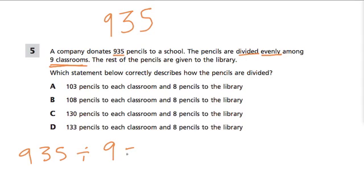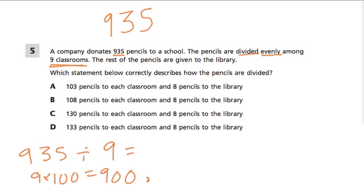This is actually a nice, easy division problem, because nine times 100 is 900. We just need to find how many times nine goes into 935. Nine times four is 36 — that's too large, we've gone over 35. So, nine times three is 27.